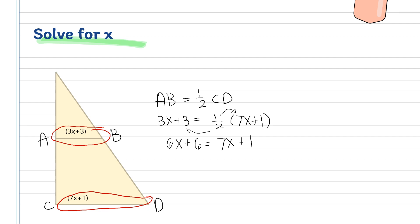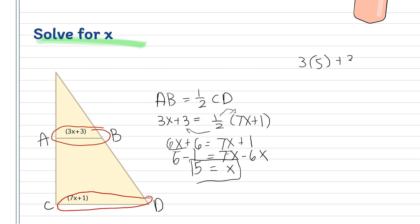Let's put together the terms with the same coefficients. We have 7x − 6x on one side, and 6 − 1 on the other side. Therefore, x is equal to 5. To check: substituting x = 5, we get 3(5) + 3 = 18, and 7(5) + 1 = 36. The value of x is correct because 18 is half of 36.